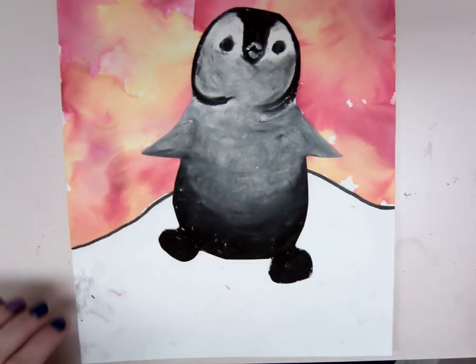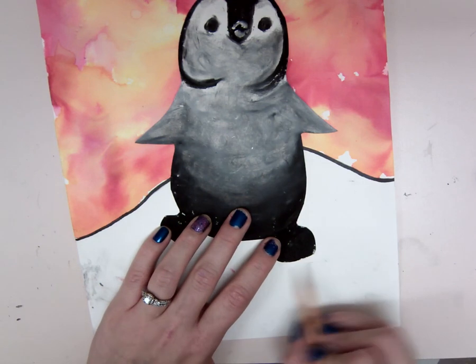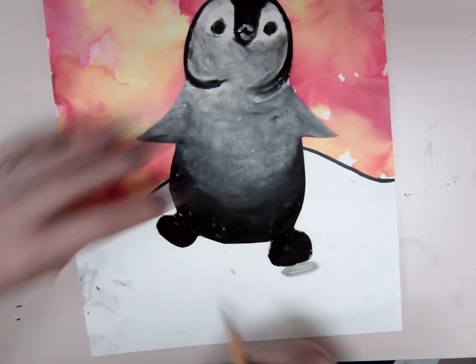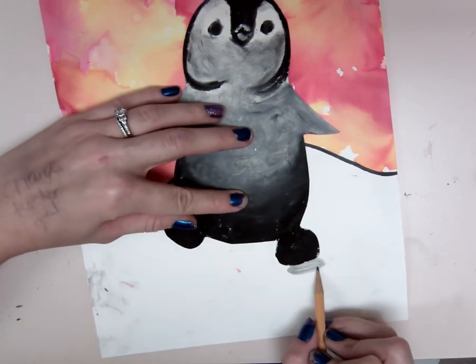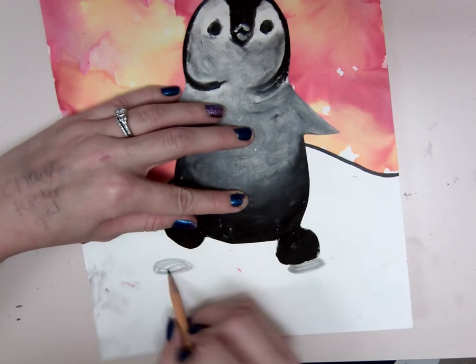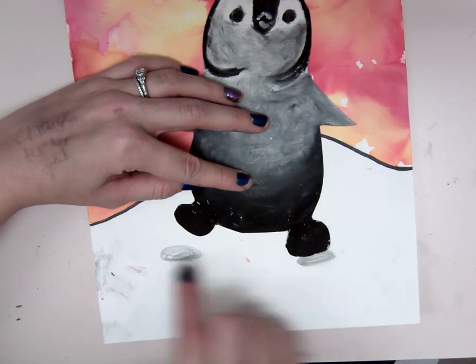And then what you'll do either with your pencil or with the black oil pastel, you draw a little oval right next to it so it looks like a shadow. And you can put it right next to the foot or you can have it be a little bit farther off. So it looks like now one foot is resting on the snow and then one foot is jumping.